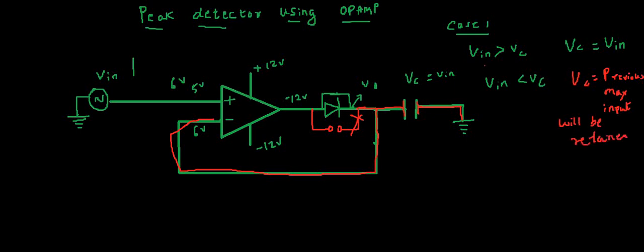Now again if V in is greater than VC, that is say 7 volts. Now 7 is greater than 6. Now again 12 volts, so this will get forward biased. Now again this configuration will look like voltage follower. So this output will follow the new input 7 volts. The capacitor also will charge to new input which is equal to 7 volts.